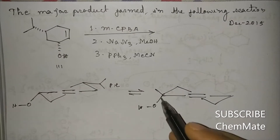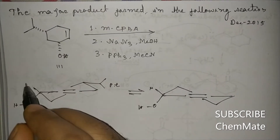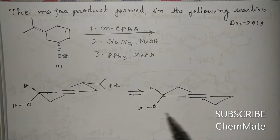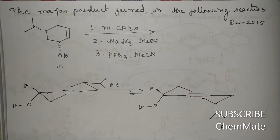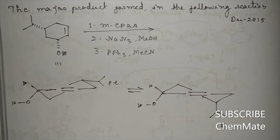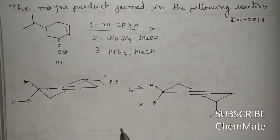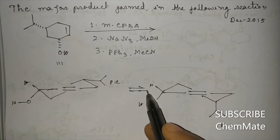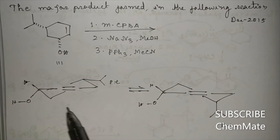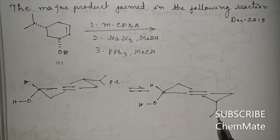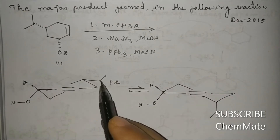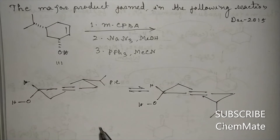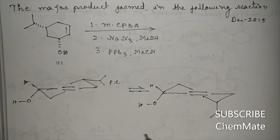After ring flipping, the isopropyl group will be in a pseudo-axial position. Between these two conformations, the one where the large isopropyl group is in the equatorial position is more stable, and the equilibrium will shift towards it. The conformation with the isopropyl group in the axial position is less stable.